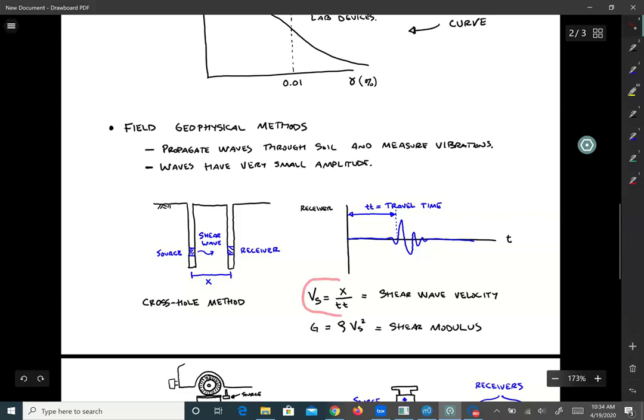Then we can measure the shear wave velocity here. It's the distance between the source and receiver divided by the travel time, and that's VS, shear wave velocity. The shear wave velocity is important because we can directly compute shear modulus from it. G, the shear modulus, equals rho times VS squared, where rho is the mass density. If we have rho in units of megagrams per meter cubed, and VS in meters per second squared, we end up with G in kPa.